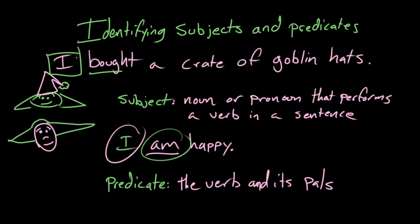Yeah. And then predicate is basically everything else, right? So it's bought, what did I buy? A crate of goblin hats. Right. So you can see that a crate of goblin hats is also a noun, right? But it's not doing anything in the sentence. I am buying. So just because there's a noun, just because there's another noun in the sentence, like crate or goblin hats, doesn't necessarily mean that it's the subject. Right. So you have to look for the thing that is performing the verb. Exactly.